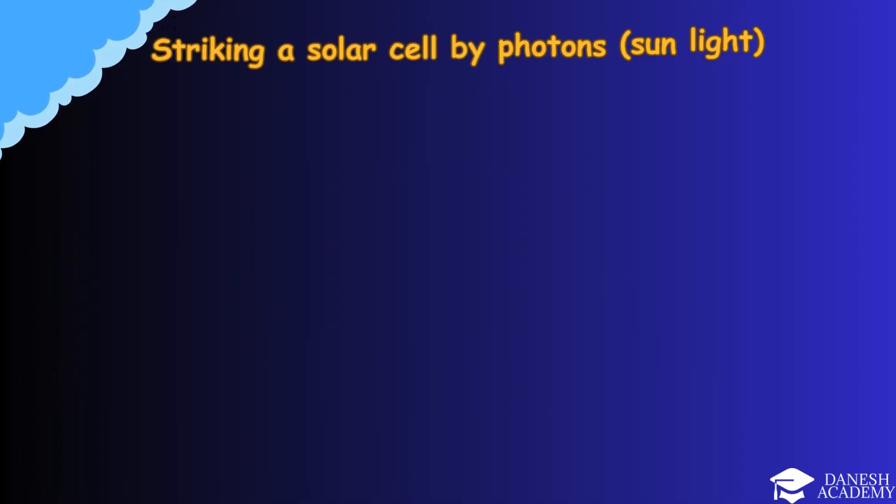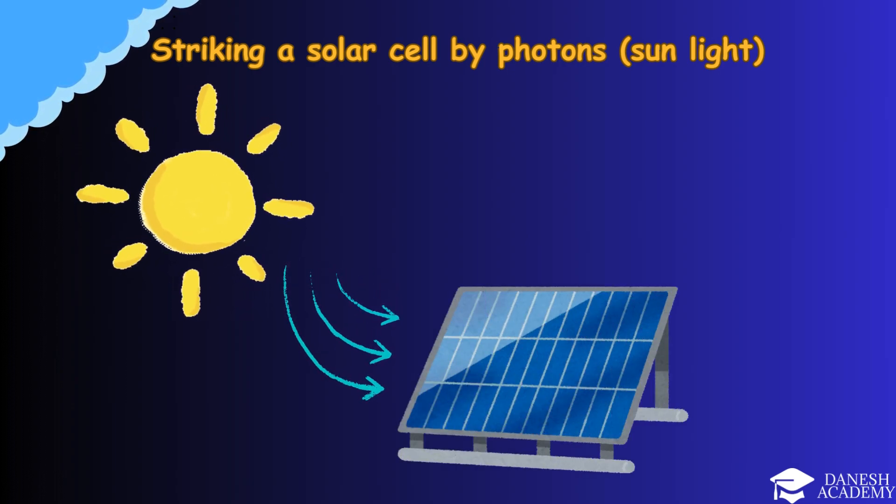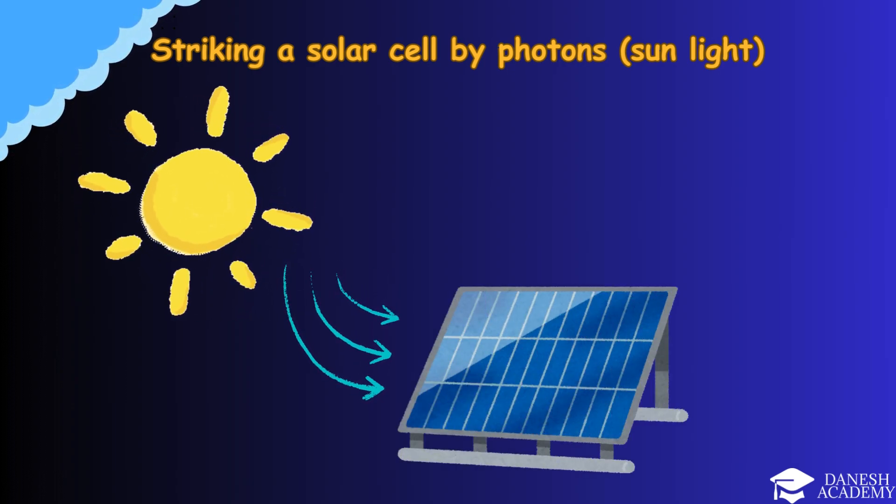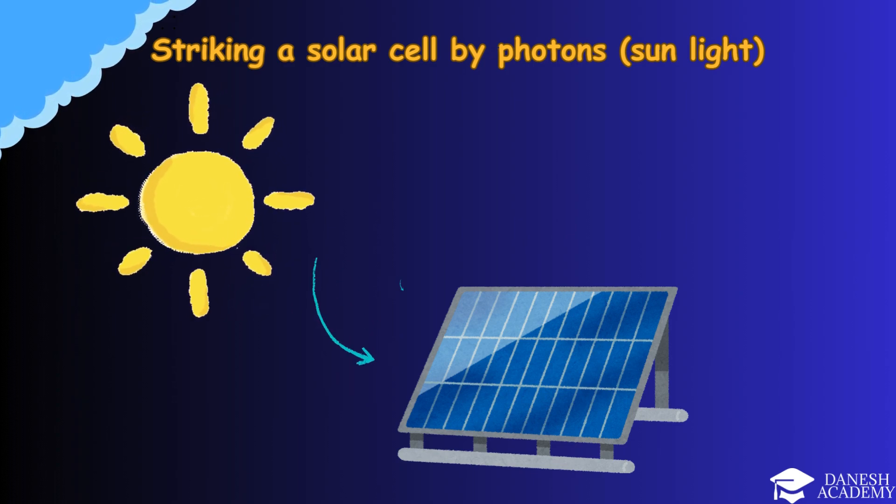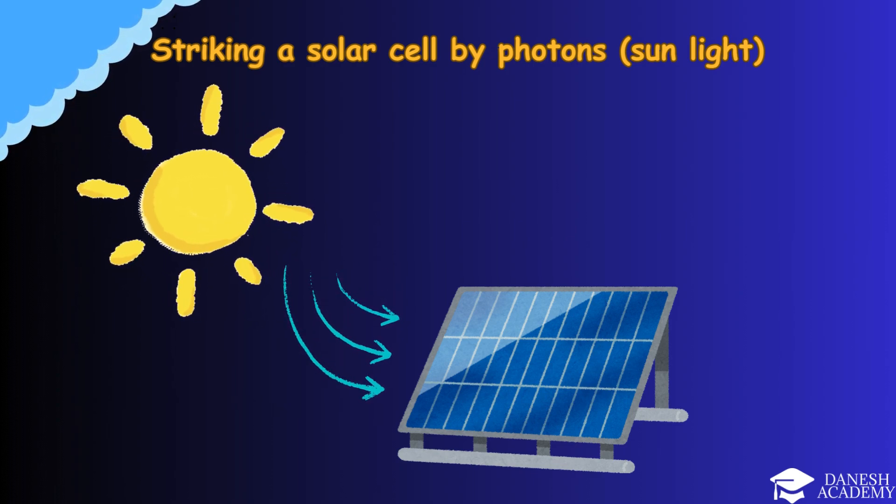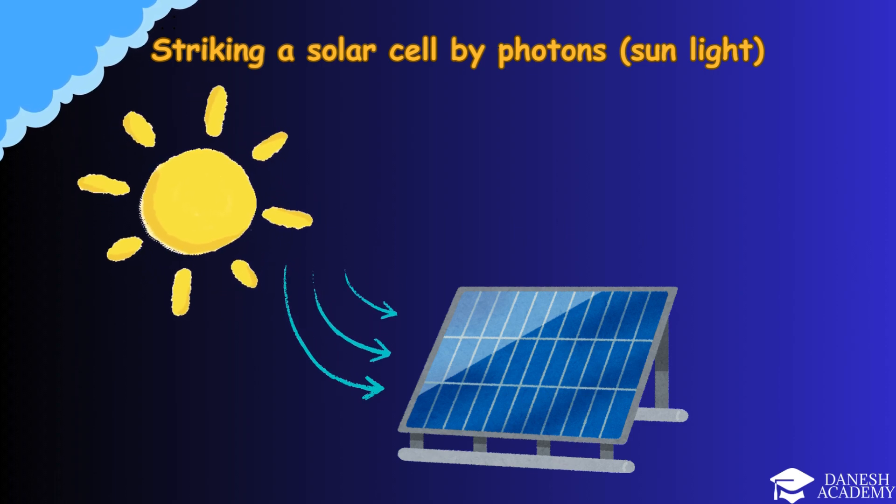The process of converting sunlight into electricity begins here. When sunlight reaches the solar panel, its photons, tiny packets of energy, hit the surface of the solar cell. This is the starting point where the energy needed for electricity generation is captured.